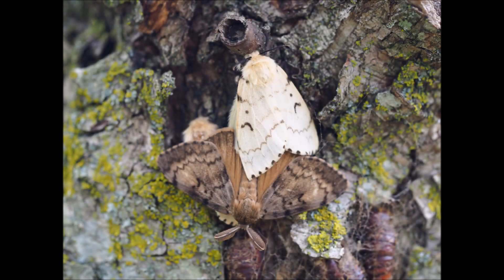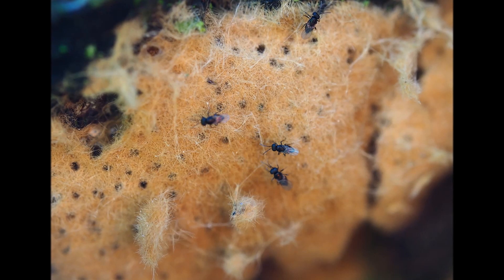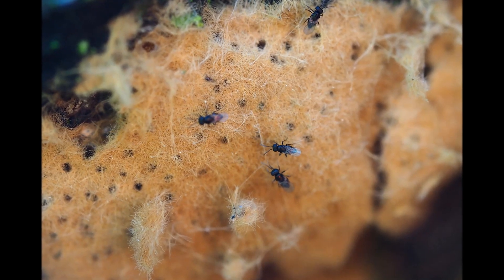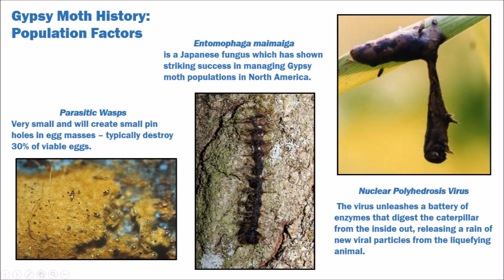Although gypsy moth is not a native species, there are some factors that help to control the population without human interference. Part of the reason gypsy moth populations crash is due to parasitic wasps and flies, which destroy 30% of eggs before they hatch. A fungus introduced into our environment from Japan, known as Entomophaga, also kills many caterpillars. A virus known as nuclear polyhedrosis virus also kills mature caterpillars. In both cases with the fungus and the virus, caterpillars are turned into liquefied blobs that drip from the trees — not pretty, but very effective.